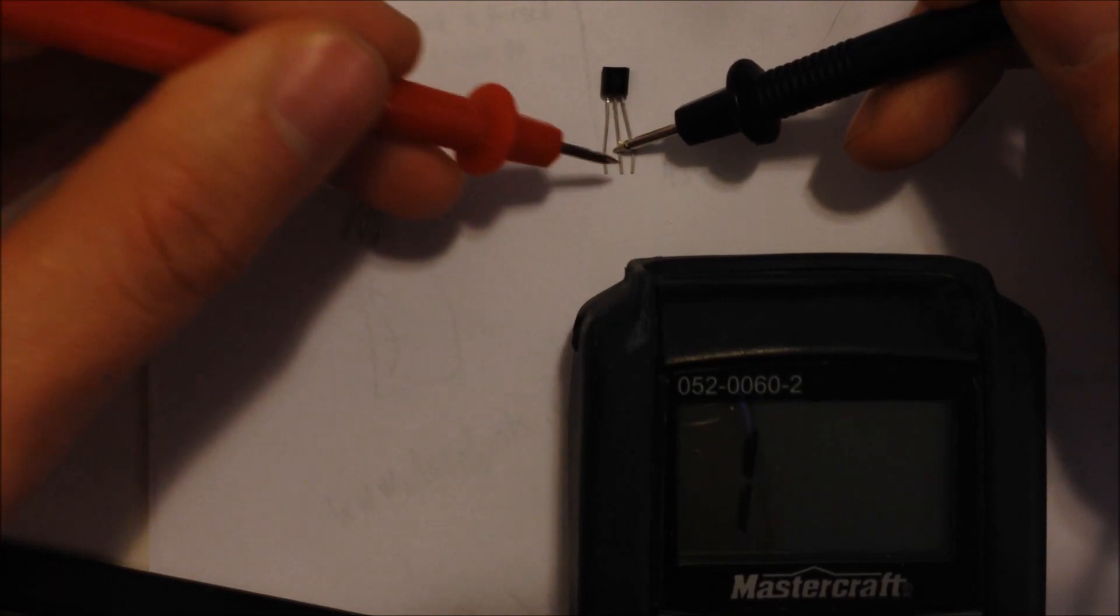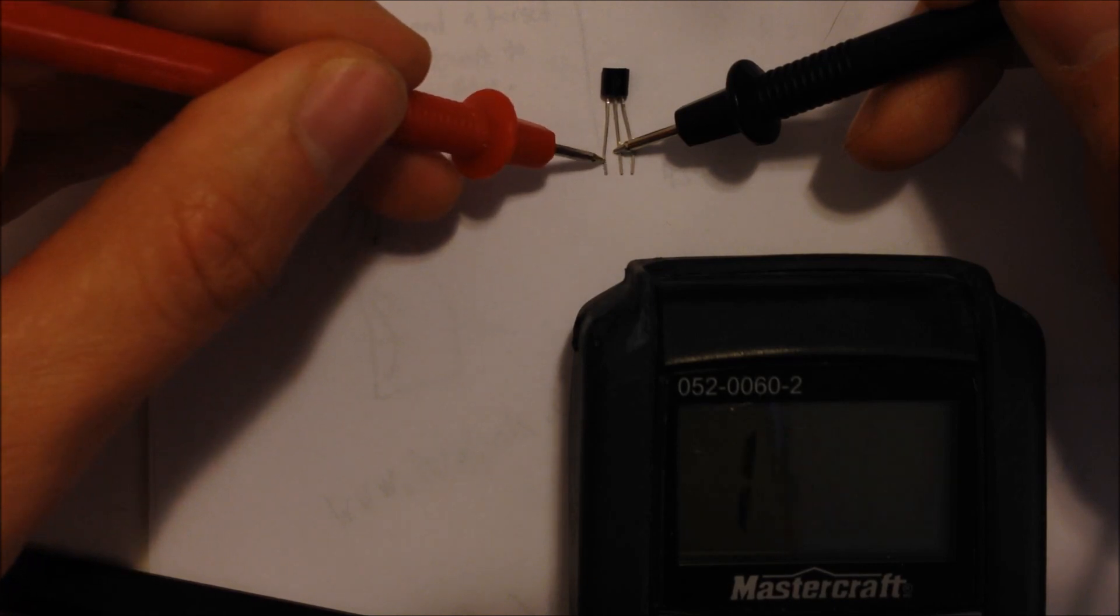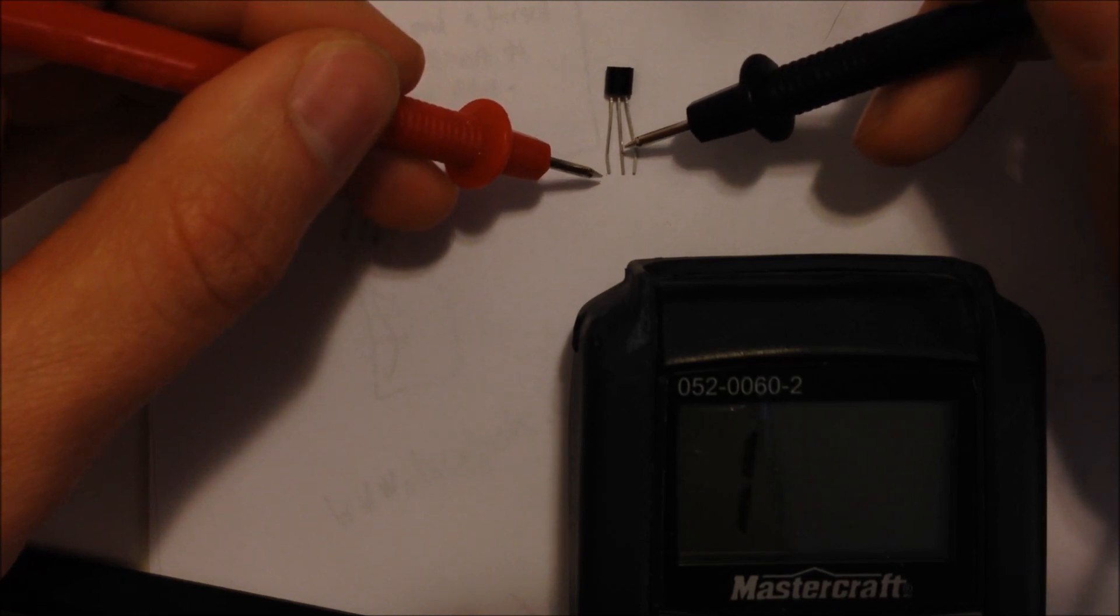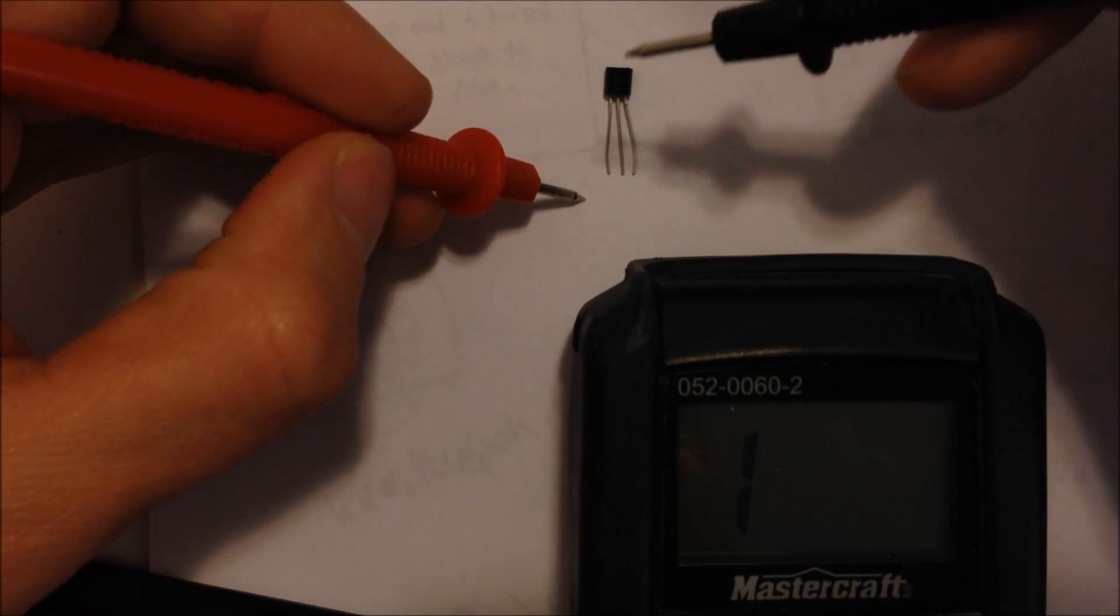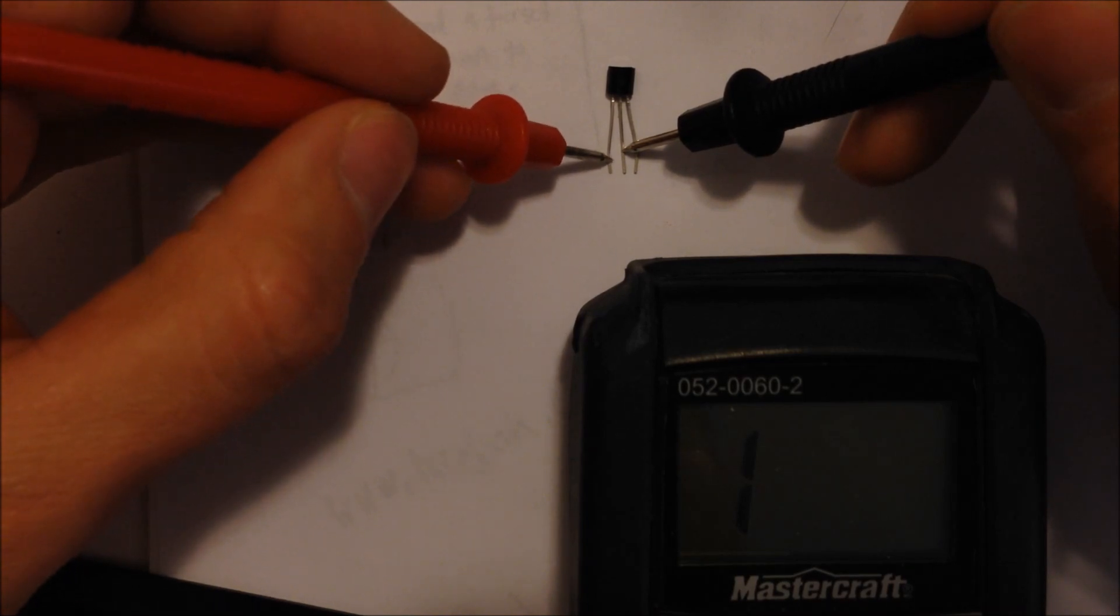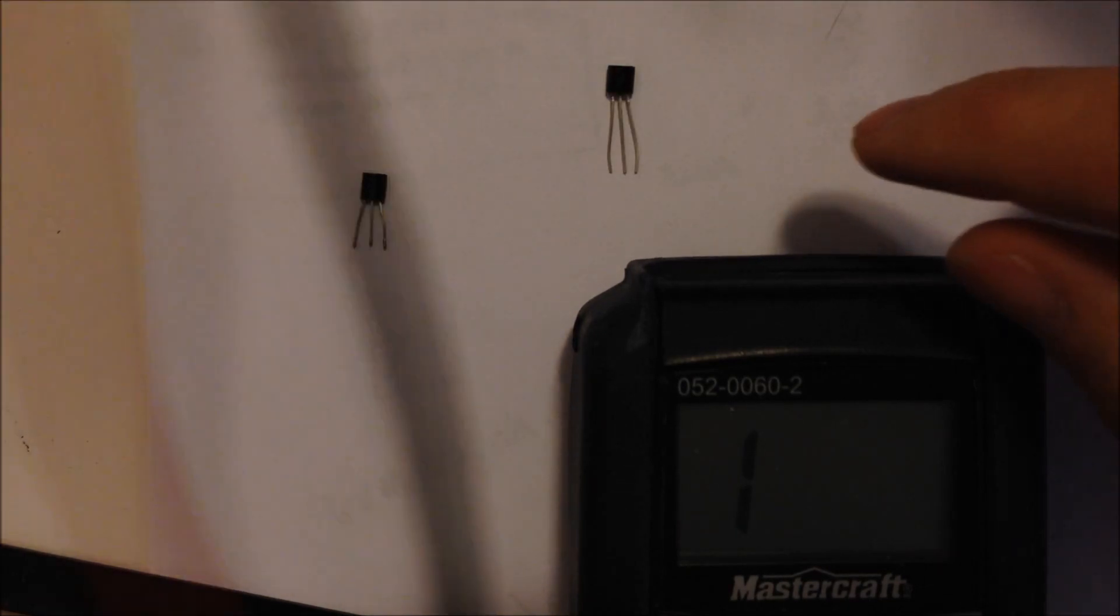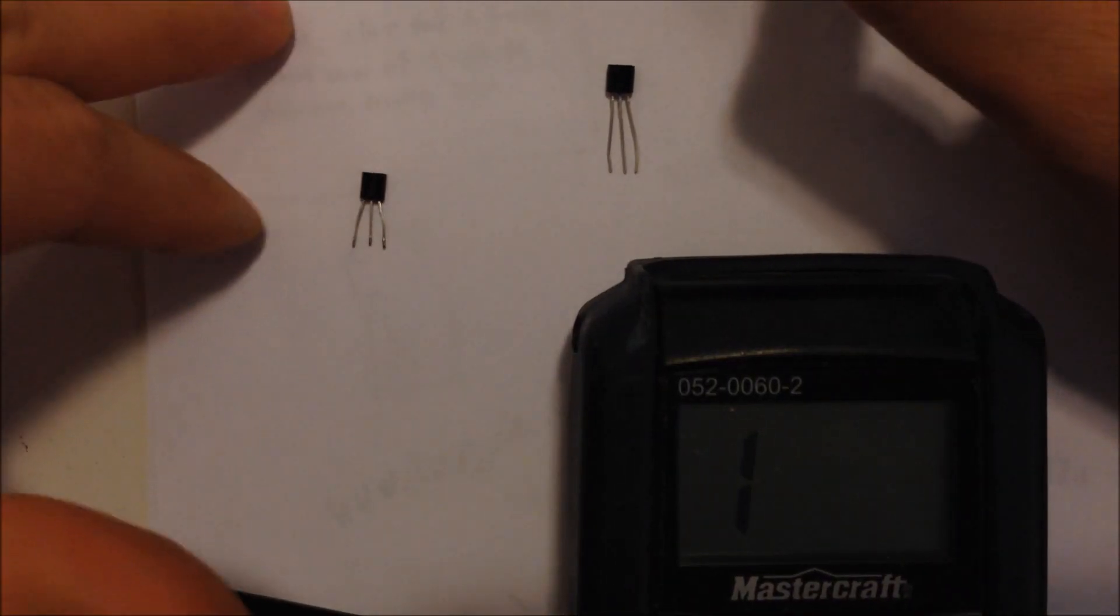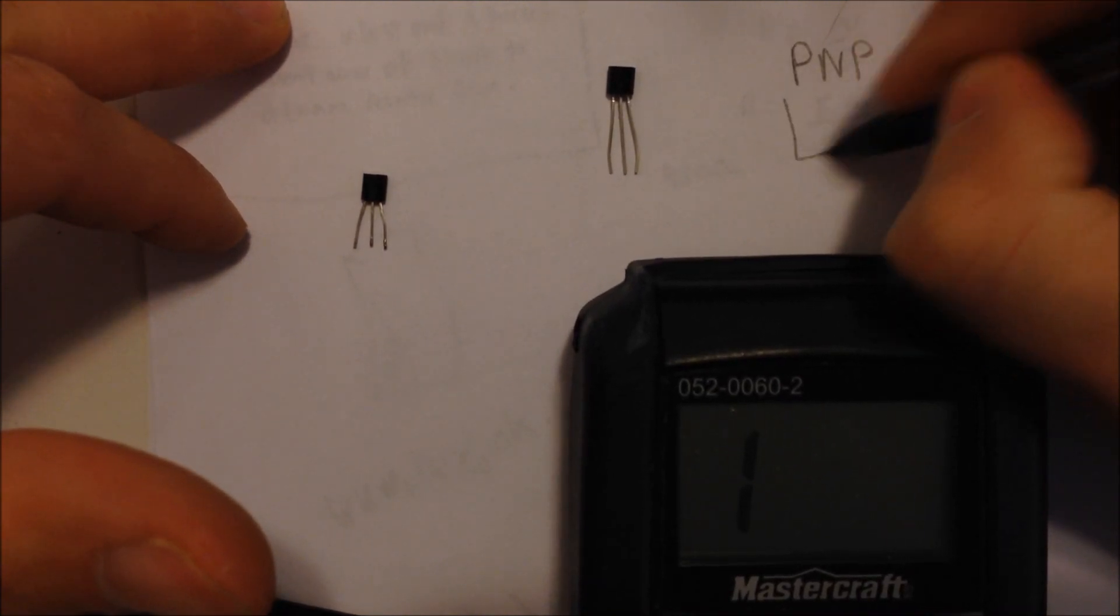...and the positive one on either the emitter or the collector, and we get a reading here. Likewise, if I take the positive and switch it over to the other lead here, we get a similar reading. So that would say to me that this transistor right here is a PNP, because the negative lead is on the base. So the base is negative. So this guy here is a PNP. I'll just put a box over here, call it PNP, and I'll just slide this guy in there.